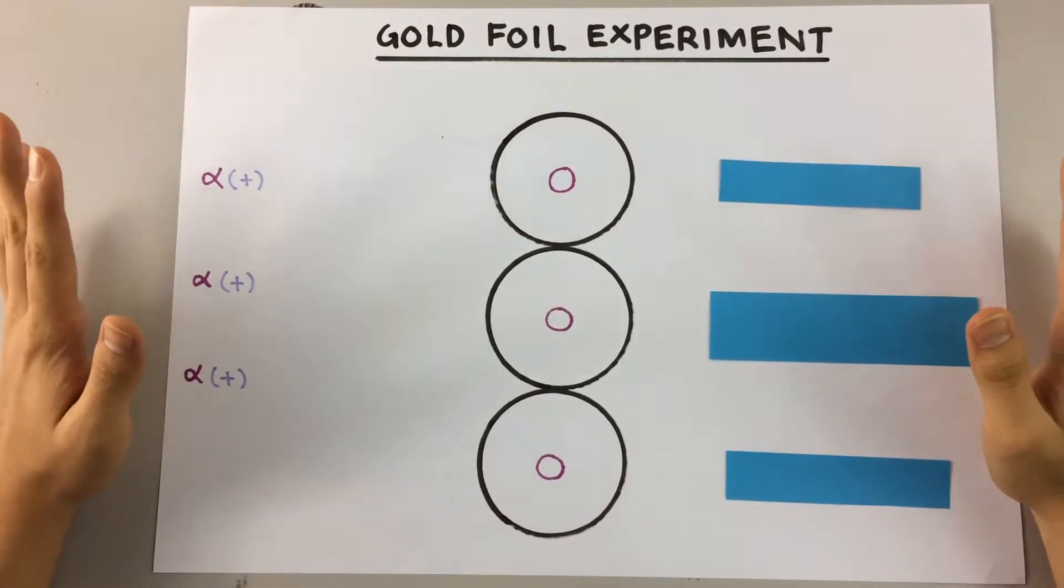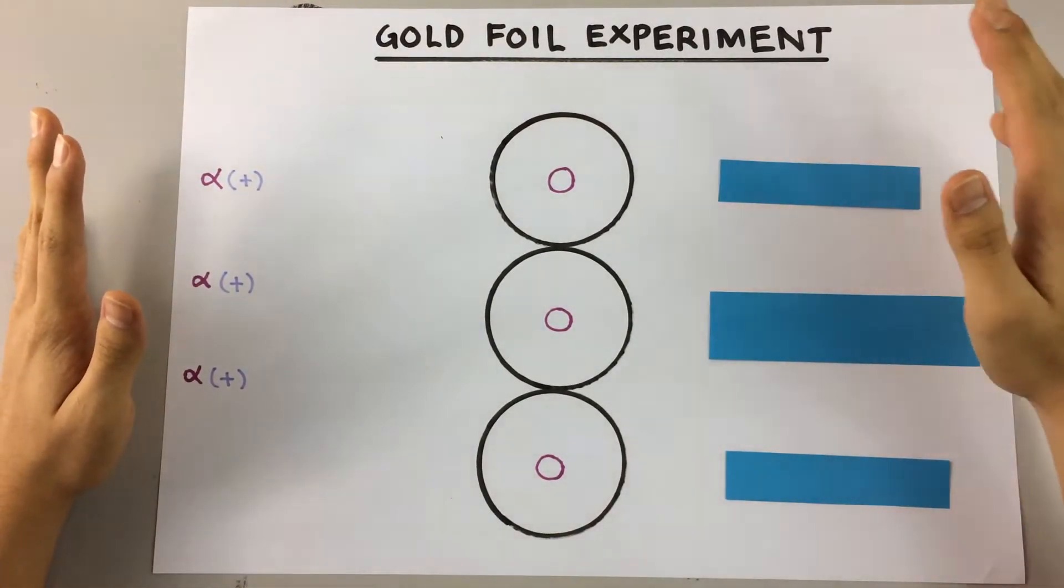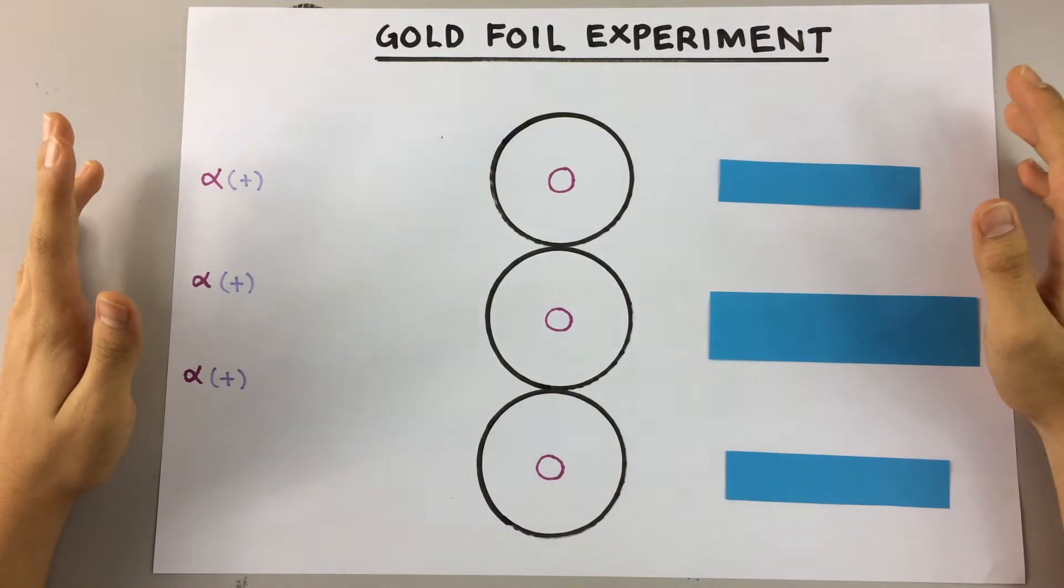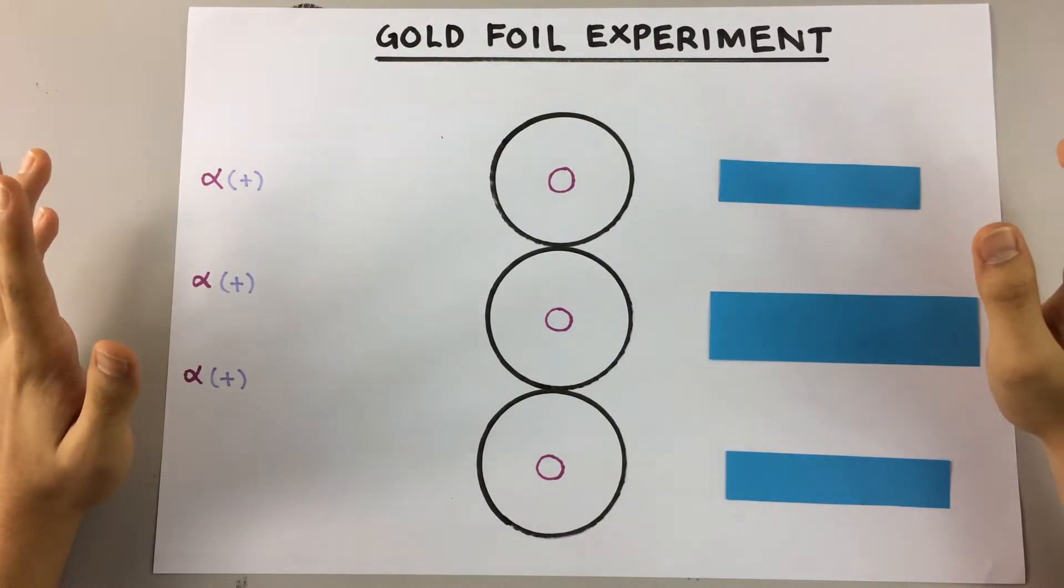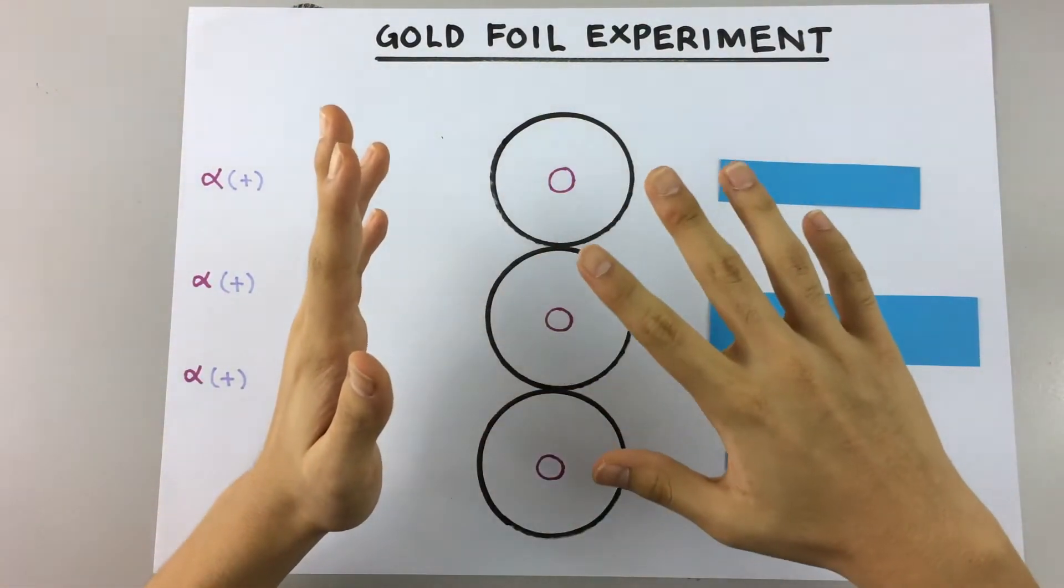Welcome everyone. So today we're going to take a look at Rutherford's gold foil experiment. Now Rutherford carried out this experiment to study the structure of the atom.